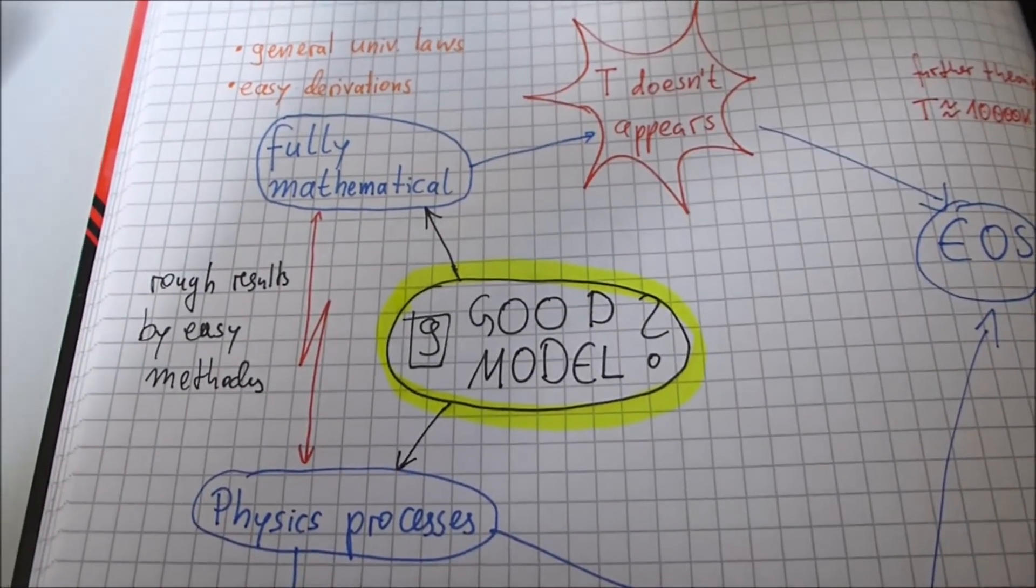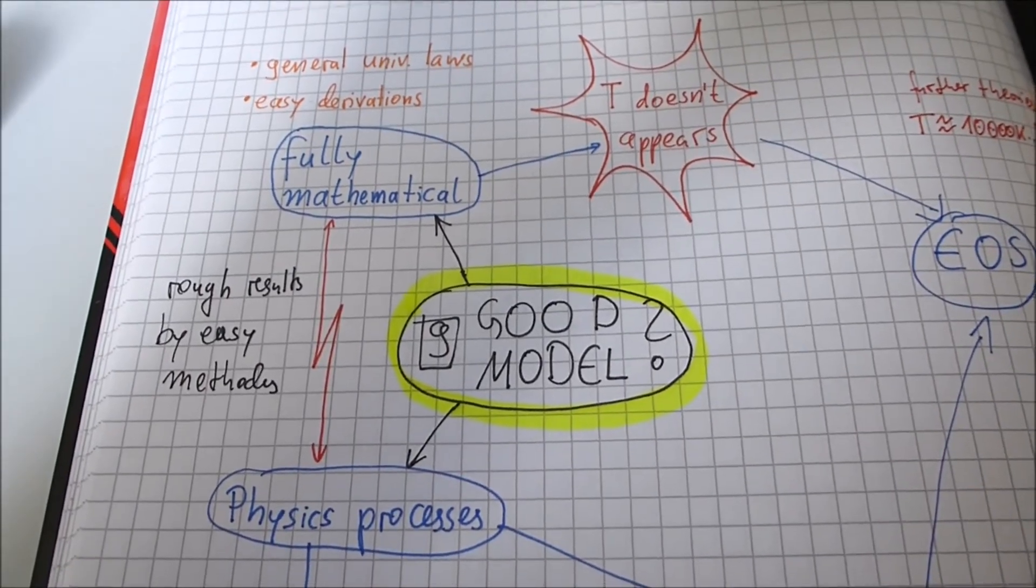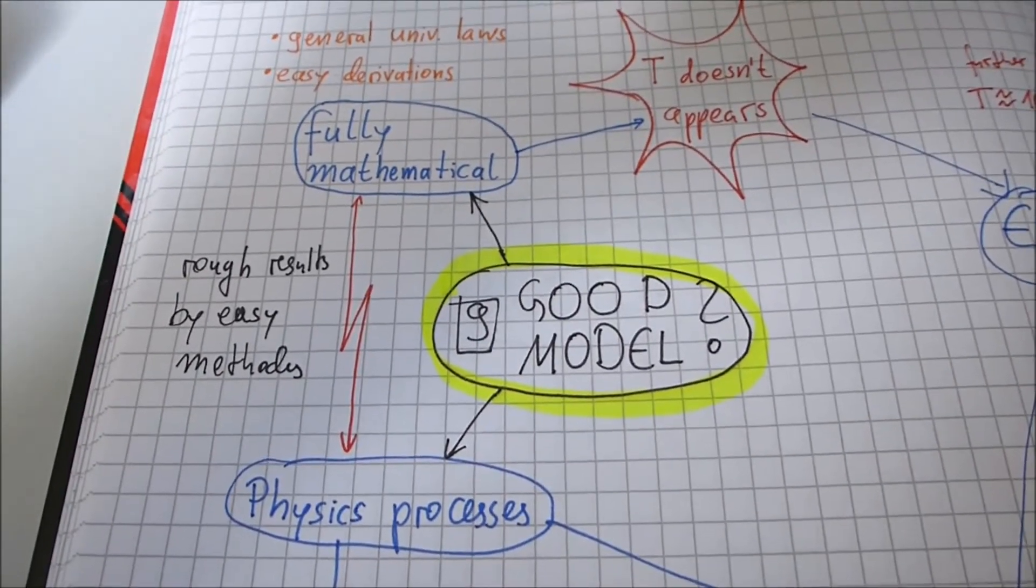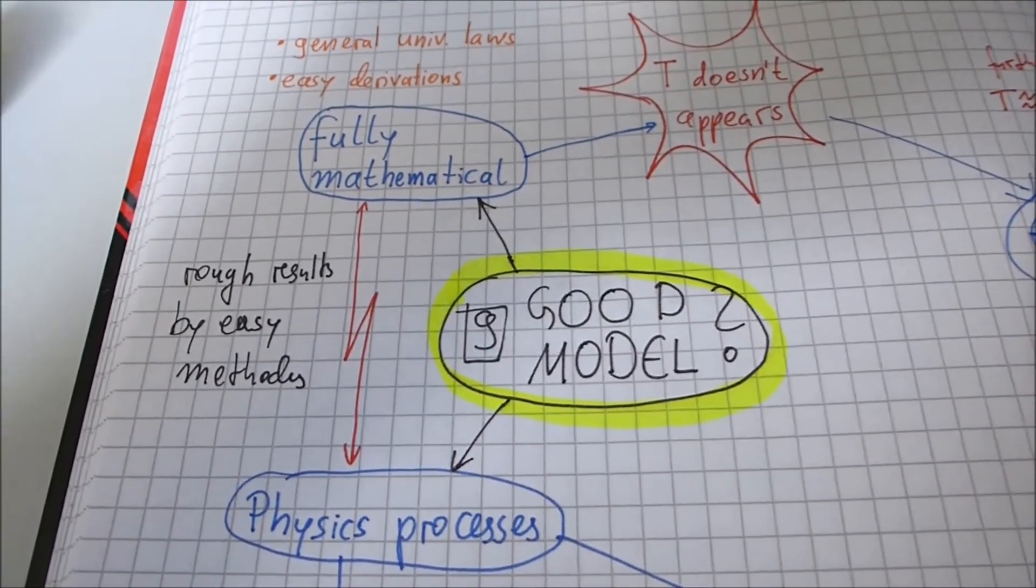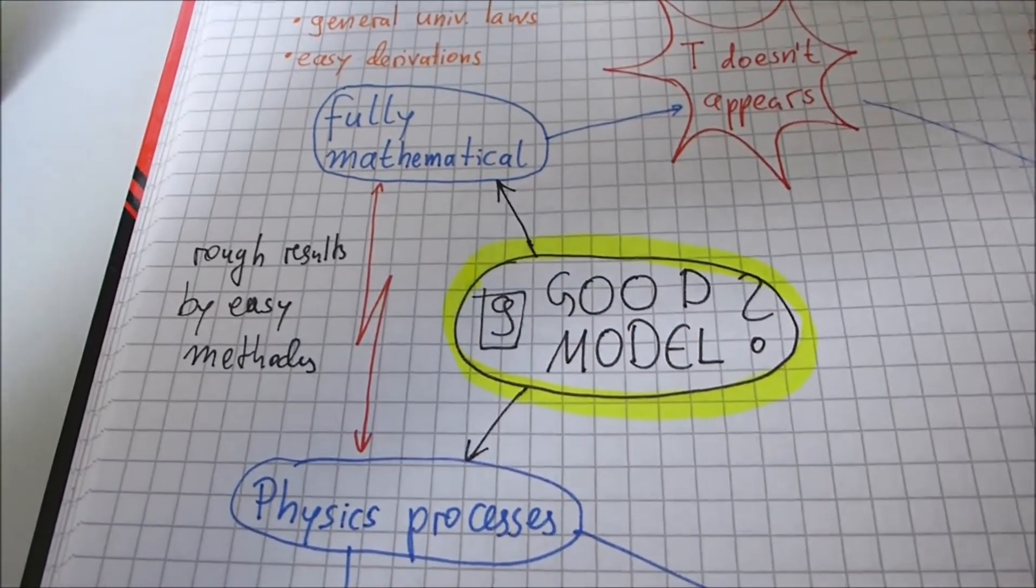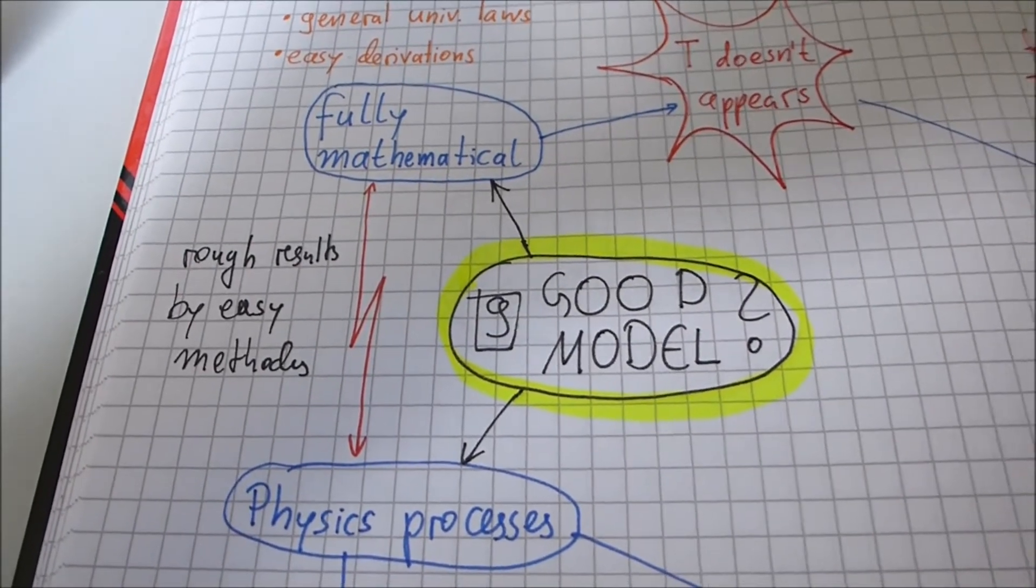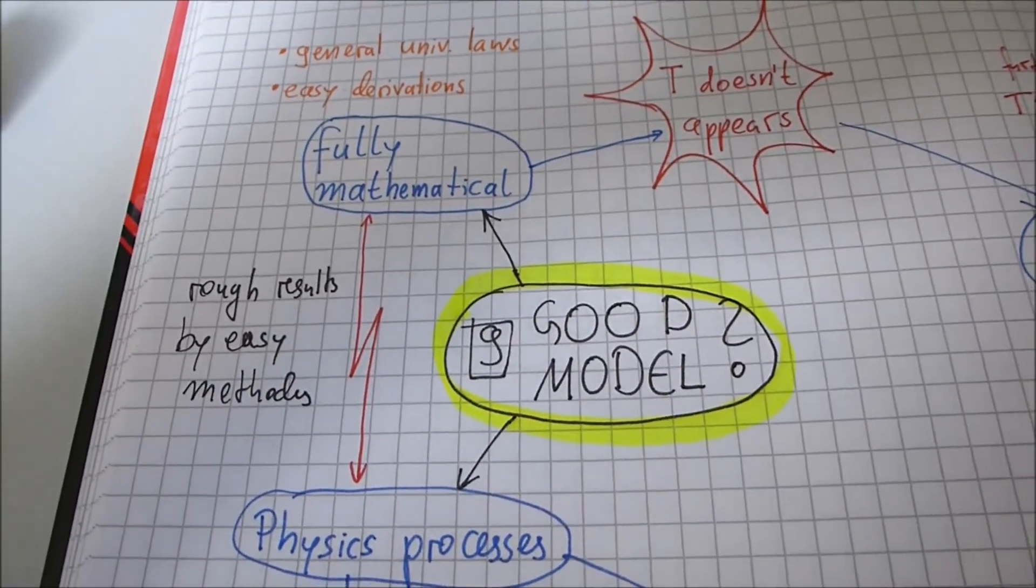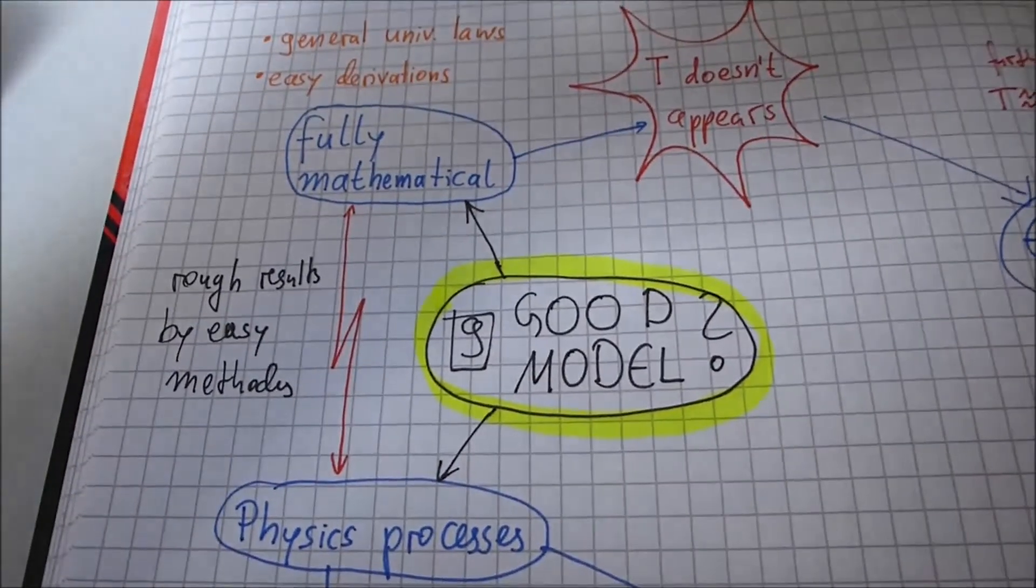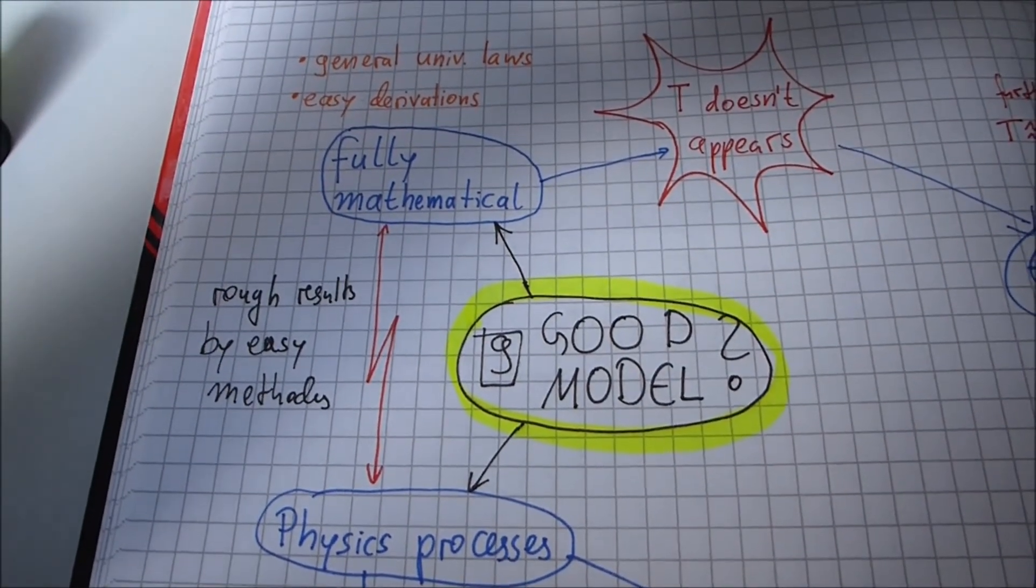In the end, I want to summarize what one can remember about the Lane-Emden equation. And this is maybe this little edge of my sketch here. So we have, by the Lane-Emden equation, in case of self-gravitational objects, roughly good results by easy mathematical methods. And this is maybe the thing to remember about the Lane-Emden equation, I think. And thanks for watching my video, and goodbye!